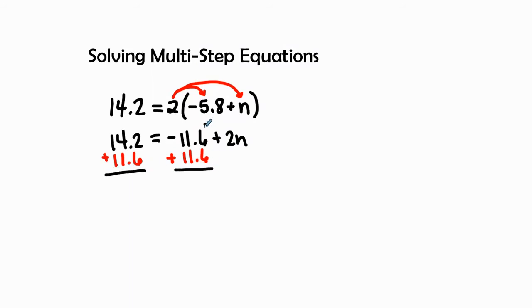So I see that this becomes zero. I'm going to keep my equal signs in line with each other. I'm going to bring my 2n down, and then I have 14.2 plus 11.6 which gives me 25.8.